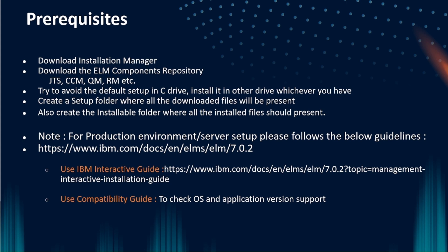Create a separate folder for downloadables and a separate folder for the actual installation files, so everything is segregated. Note that what I'm showing is not for a production environment setup — the steps are somewhat similar but you need to follow specific guidelines for production. I'll provide an ELM reference link where you can check how to set up a production server.